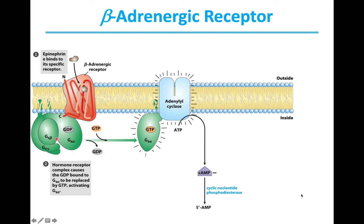G-protein is a complex of 3 different domains: Gs-gamma, Gs-beta, and Gs-alpha. Once the interaction of the beta-adrenergic receptor with Gs-alpha is affected by the interaction of epinephrine, Gs-alpha results in the expulsion of GDP from the alpha subunit.